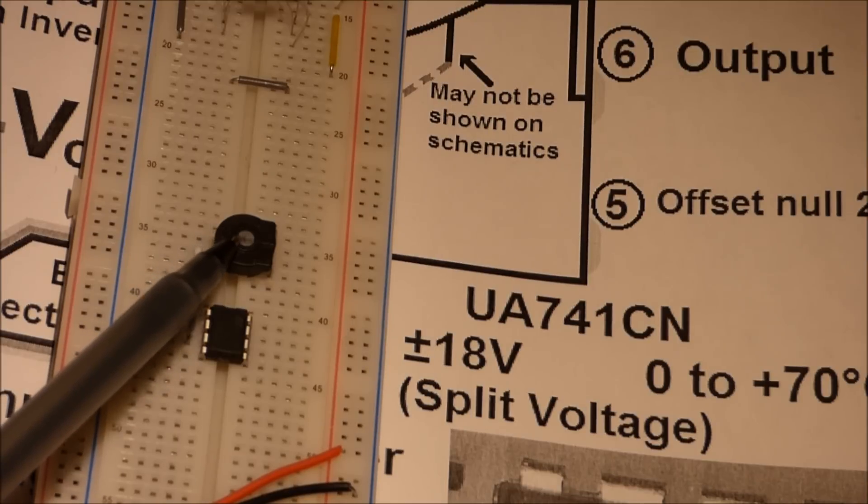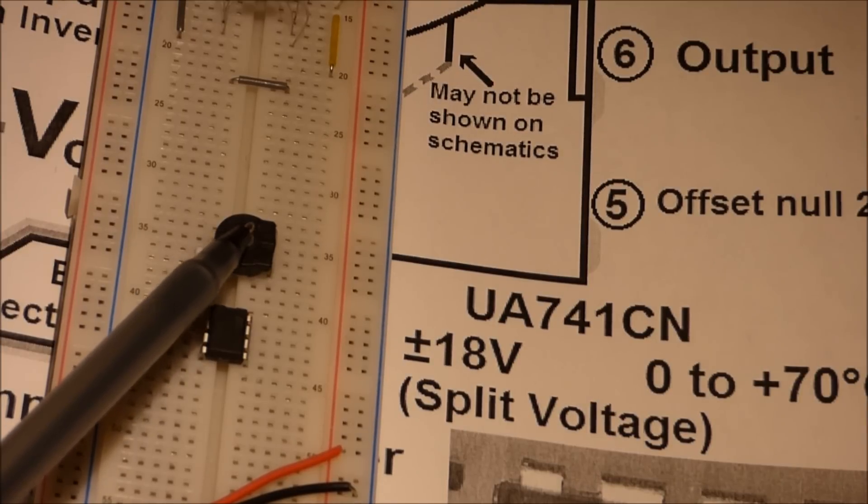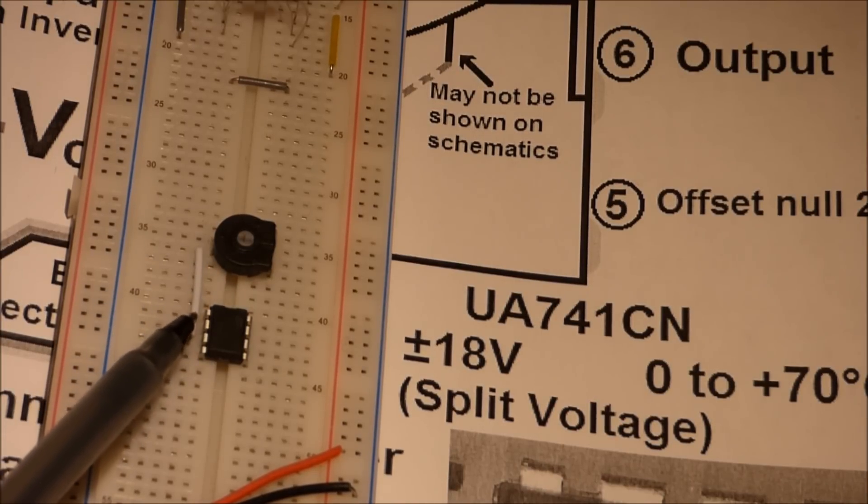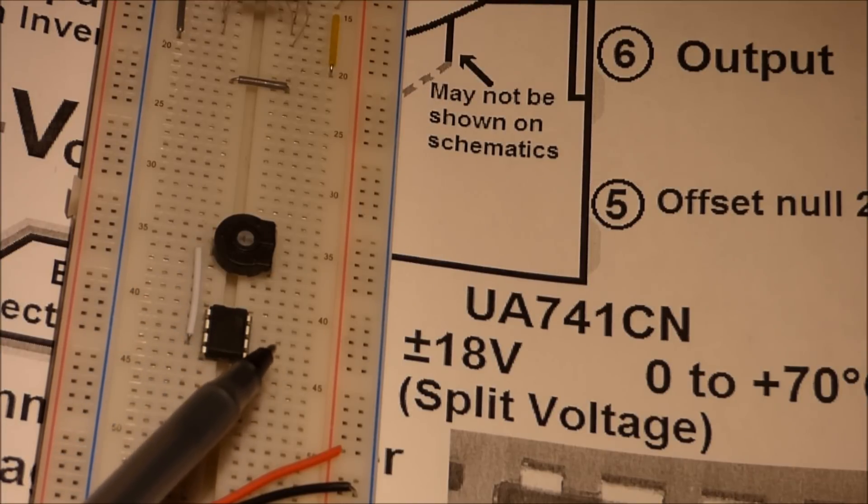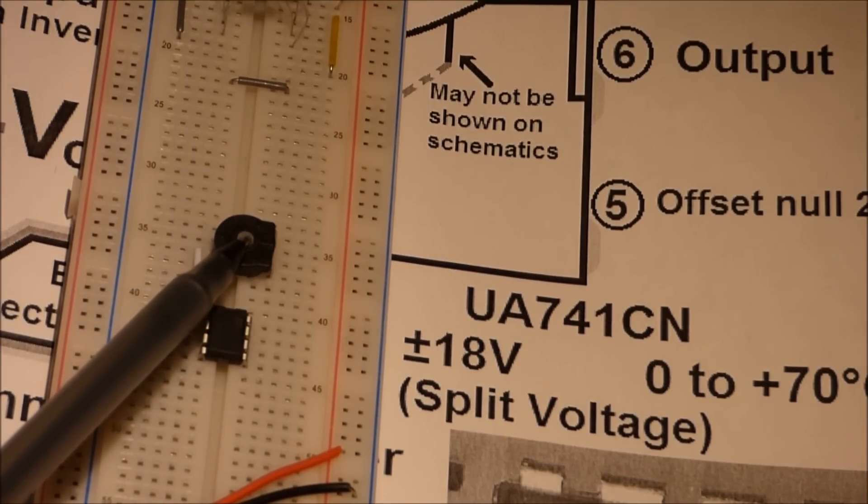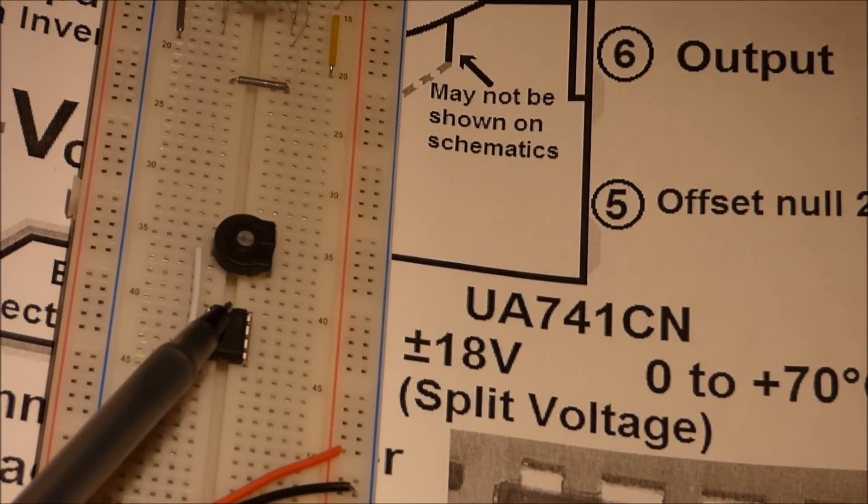I'm going to use this variable resistor here as one of the inputs. When the voltage from this variable resistor is higher than the voltage to another pin, then the output will be on. The output is going to be an LED. When the voltage from this variable resistor is below the voltage we set on another pin, then the output, the LED, will be turned off.